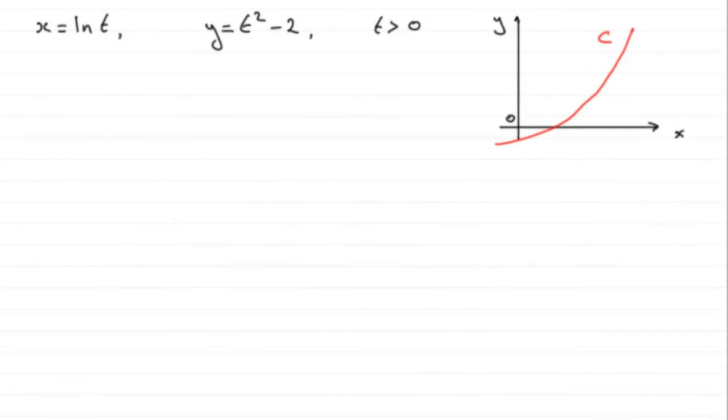Now for this part of the question, we're given the parametric equations x equals the natural log of t and y equals t squared minus 2 for this curve C, and we're asked to work out a Cartesian equation for C.